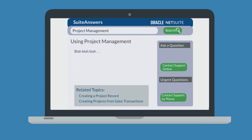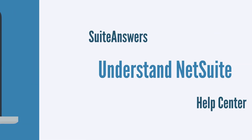If you're in a help topics article in Suite Answers and need more information about the topic, you could scroll down to the end of the article and check out the related topics that are linked there. It can be easy to get sucked into the vortex of never-ending related articles, however, so search with care.